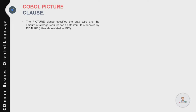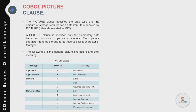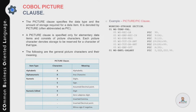Now let's talk about the picture clause in COBOL. The picture clause is used to specify the data type and the amount of storage required for a variable or data item. It is denoted by PICTURE, often abbreviated as PIC. A picture clause is specified only for elementary data elements, and consists of picture characters — each character denotes storage to be reserved for a character of that type. For alphabetic data, the picture character is A, which can only store A to Z.